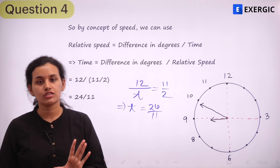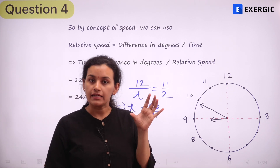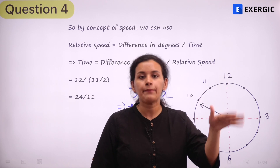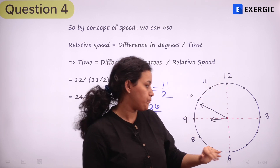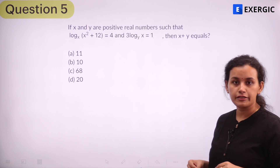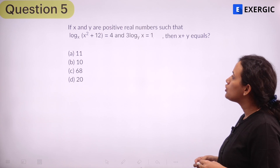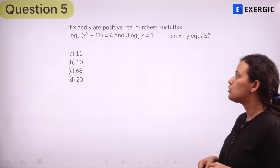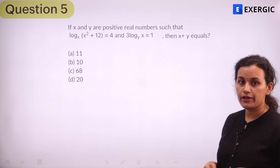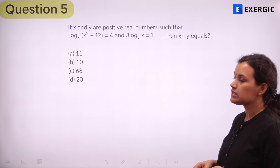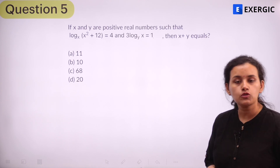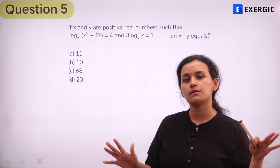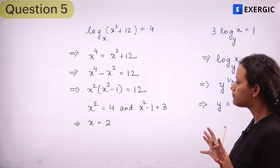This is how we solve clock questions — by applying the concept of relative speed, since the clock is nothing but two bodies moving in the same direction. Now let's look at a question of algebra using logarithmic concepts. You have x and y as positive real numbers such that log base x of (x² + 12) = 4, and 3·log base y of x = 1. What is x + y? The options are 11, 10, 68, and 20. Pause the video and give it a try.